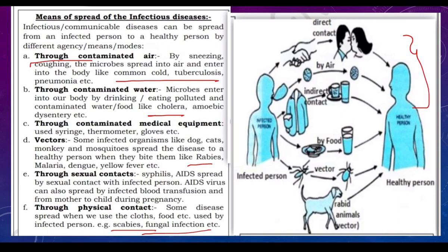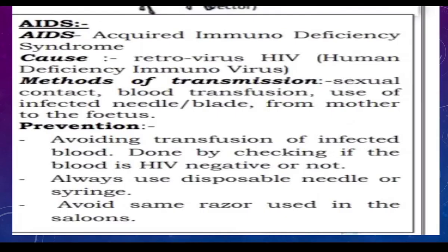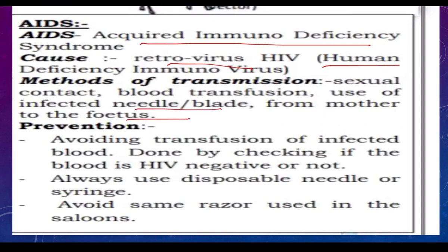What is AIDS? AIDS is Acquired Immunodeficiency Syndrome. It is caused by the retrovirus HIV, also known as Human Immunodeficiency Virus. Methods of transmission include sexual contact, blood transfusion, use of infected needles or blades, and transmission from mother to fetus.